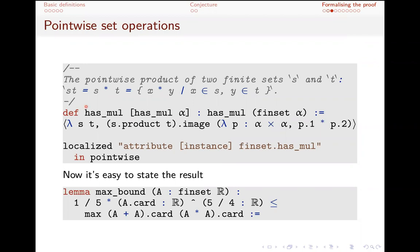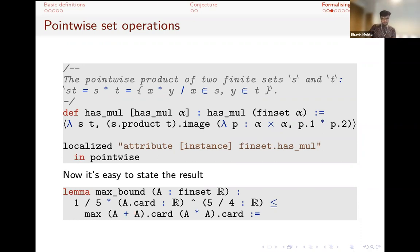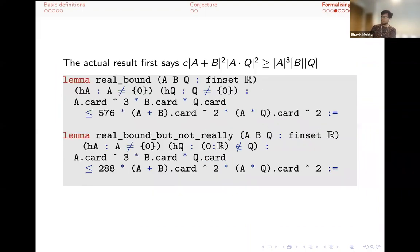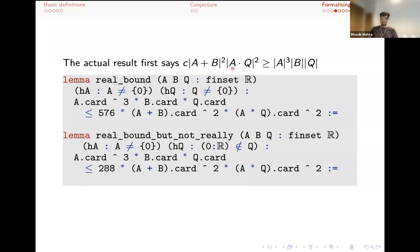I'm going to talk a little about how the actual proof works. What we'll actually prove is that the size of some sum set and some product set is bounded below. Then we apply this when B and Q are both equal to A and combine everything to get our result. In this equation there's no maximum, but that's fine because if the product is big, then one of the two must be big. The idea is that B will be the additive shifts of A and Q will be the multiplicative shifts of A.